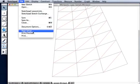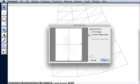And then you'll go to File, Print Preview, and choose Fit to Page, and then just Print.